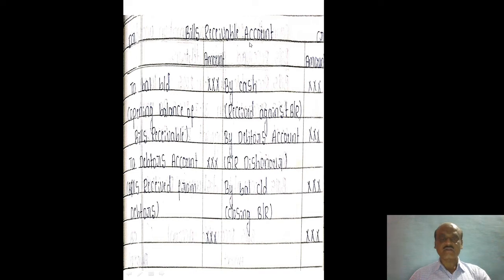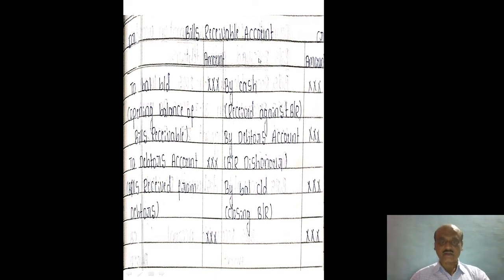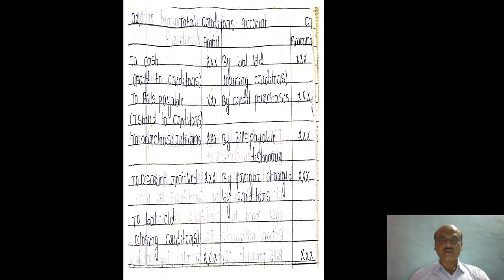New bills received from debtors — open the debtors account. Bills received from debtors, closing balance of bills, and bills receivable account open. Credit paid, and closing balance of creditors. So the creditors and debtors are the opposite.